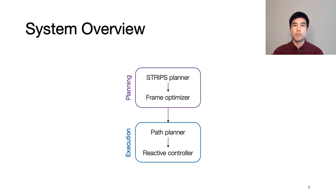Our framework can be split into two stages: planning and execution. During planning, we have a STRIPS planner to do symbolic planning and a frame optimizer to do geometric planning. During execution, we have reactive controllers that can respond to changes in the environment without the need to replan. From here, I'll dive into the details of the planning submodule.